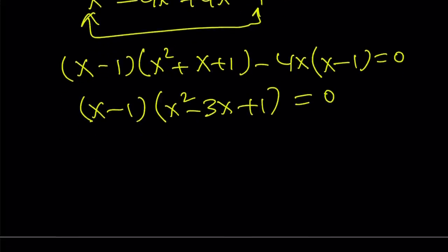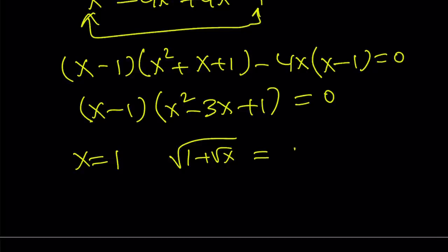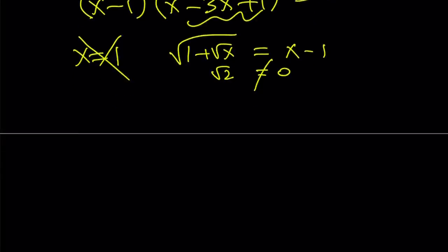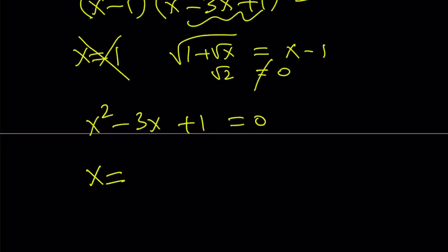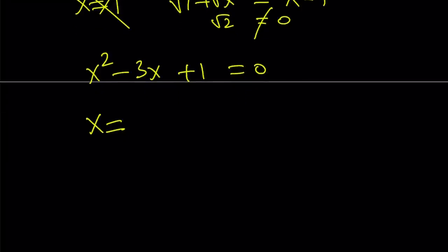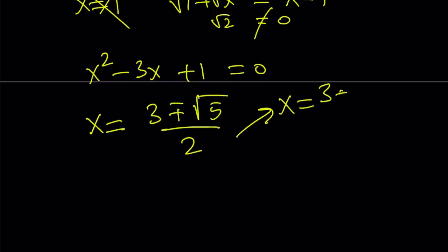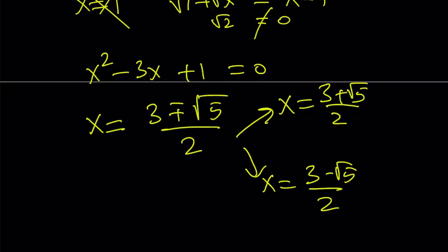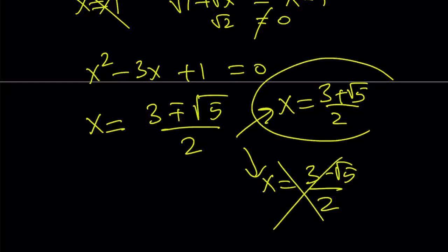From here we get three solutions, since this is a cubic. One solution is x equals 1 — but remember, squaring both sides may introduce extraneous solutions. Checking x equals 1 in the original equation gives square root of 2 on the left but 0 on the right, so x equals 1 does not work. The other factor is quadratic, and applying the quadratic formula with b squared giving 9 minus 4 equals 5, we get exactly the same results: 3 plus root 5 over 2 and 3 minus root 5 over 2. Since x must be greater or equal to 1, the second solution is rejected, and we end up with one solution again.